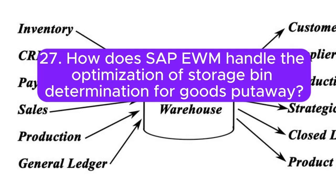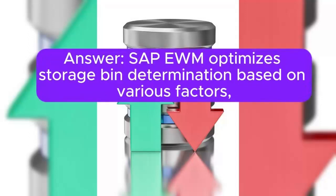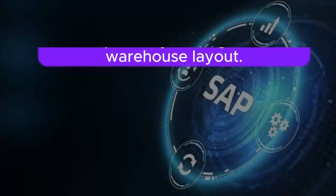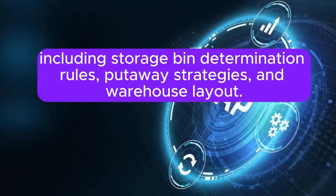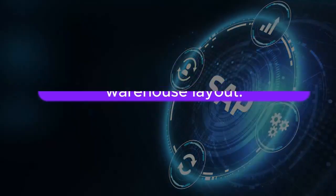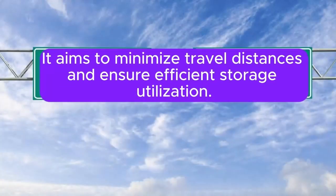Question 27: How does SAP EWM handle the optimization of storage bin determination for goods putaway? SAP EWM optimizes storage bin determination based on various factors, including storage bin determination rules, putaway strategies, and warehouse layout. It aims to minimize travel distances and ensure efficient storage utilization.